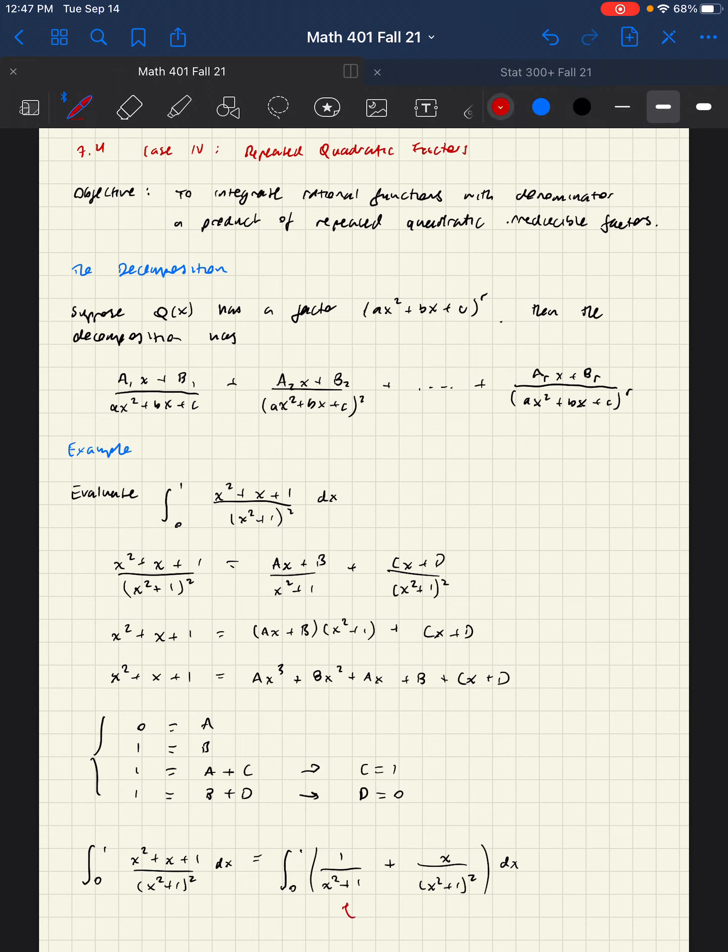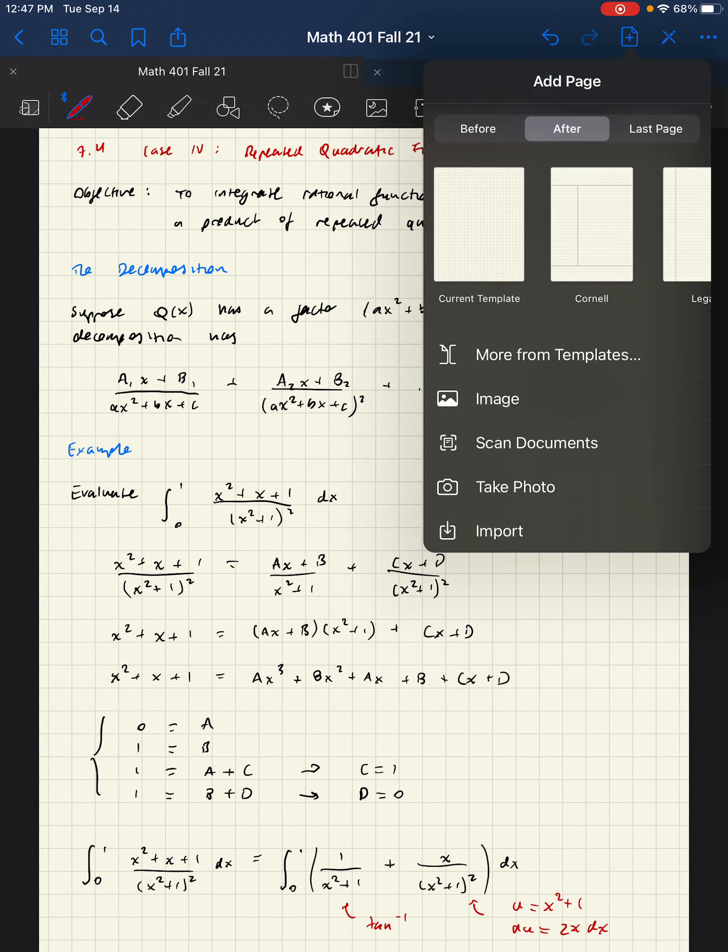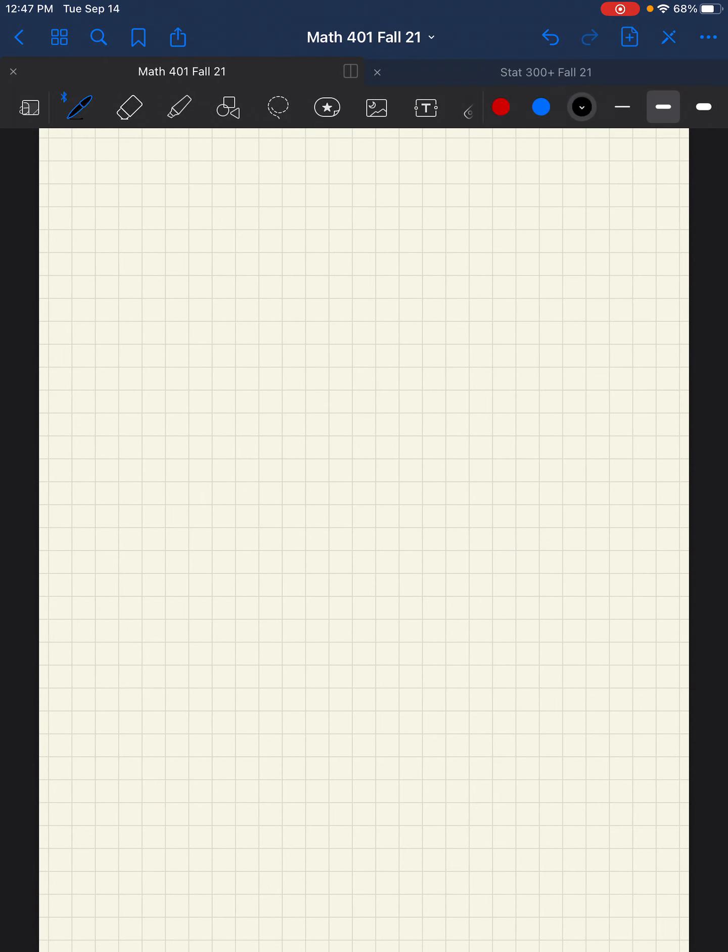Okay so how do we handle this? This first term is an immediate application of tan inverse, so we're going to apply the inverse tangent rule. And this one we're going to let u equal x squared plus one, which means du equals 2x dx, and the u substitution will let us use a natural logarithm.